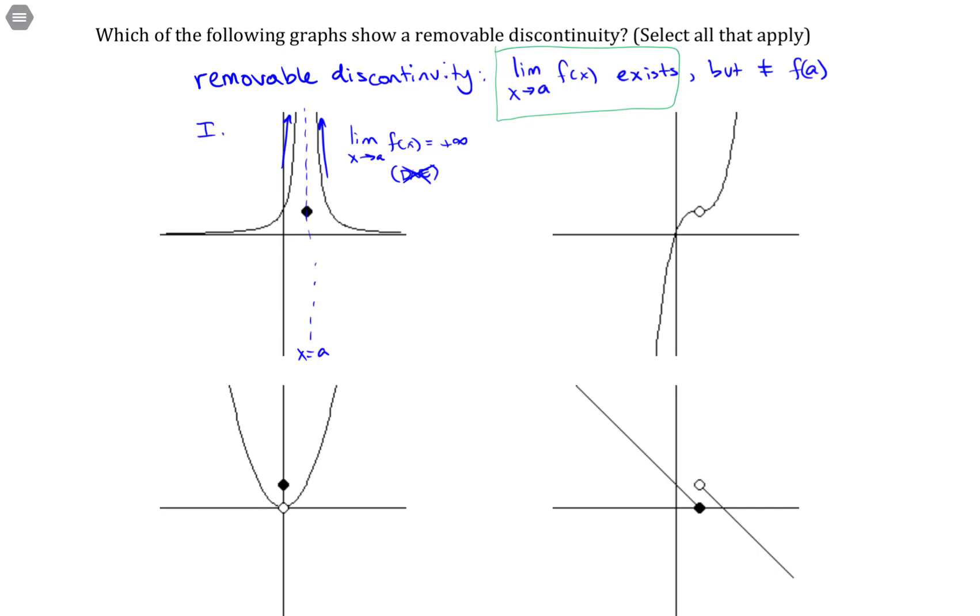But we don't answer with does not exist. We answer with the best answer, but it's understood that application-wise, we don't use it as a number. So that right there is not a removable discontinuity. So we can toss out 1 as a possibility.